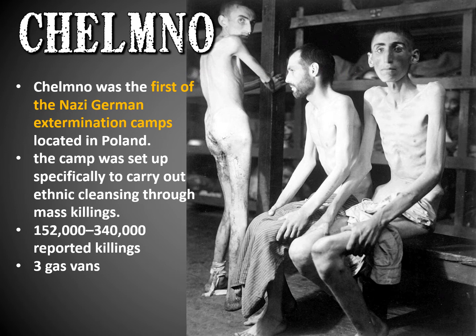The next camp is Chelmno — the first Nazi extermination camp, located in Poland. Dachau was the first concentration camp; Chelmno was the first extermination camp. It was set up specifically to carry out ethnic cleansing through mass killings — its only purpose was not slavery but mass murder. Between 152,000 and 340,000 reported killings occurred at this camp alone. The range exists because accurate record-keeping was difficult — they viewed Jewish people as disposable and it was hard to document exactly. Chelmno used three gas vans.